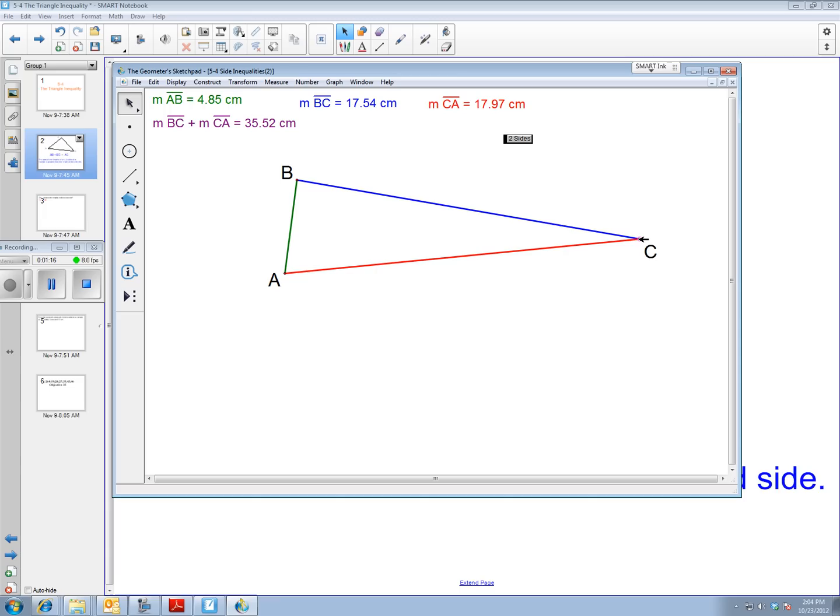If I get them really close to the green, notice I'm only 0.02 centimeters away, but the purple, which is the combination of the two, is longer.